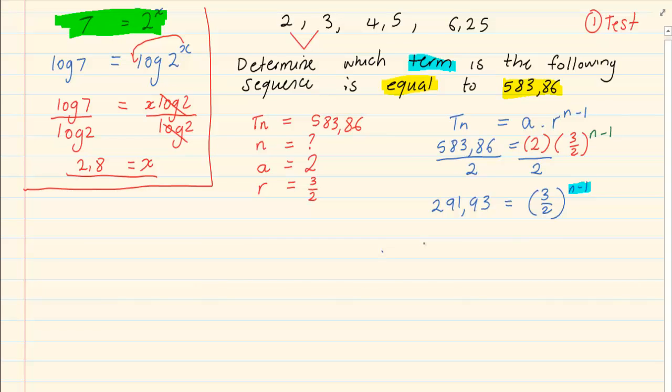So we are going to put a log on both sides. So I have log 291.93 is equal to log 3 over 2 to the power of n minus 1. The power moves in front. The entire power moves in front. So we now have log 291.93 is equal to n minus 1 log 3 over 2.